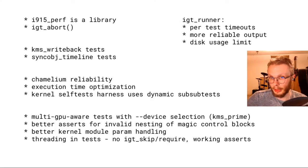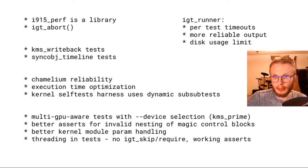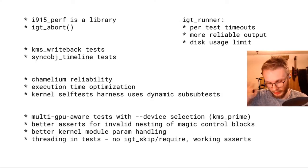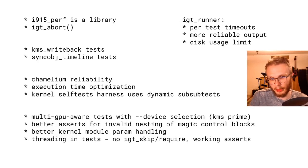There are a couple of notable test additions: we now have KMS writeback tests in IGT, and recently sync object timeline tests were added. In the last year we worked on chameleon reliability quite a bit. Chameleon is a display emulator made by Google — it acts as a display and we can fake EDIDs and read the pixels off it.